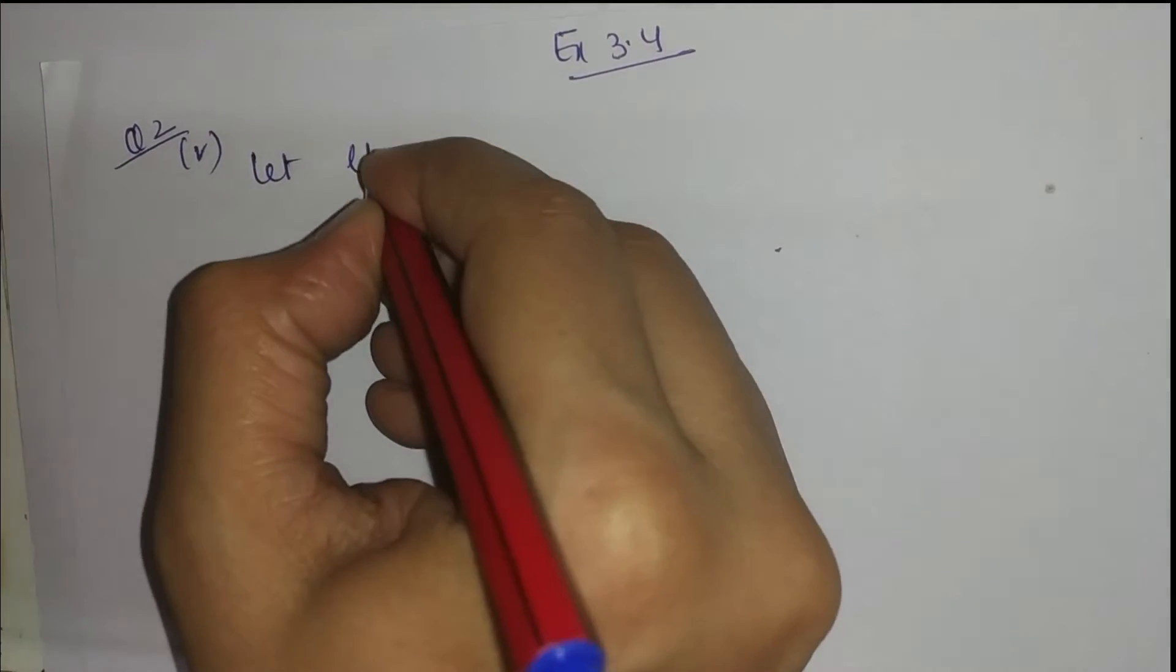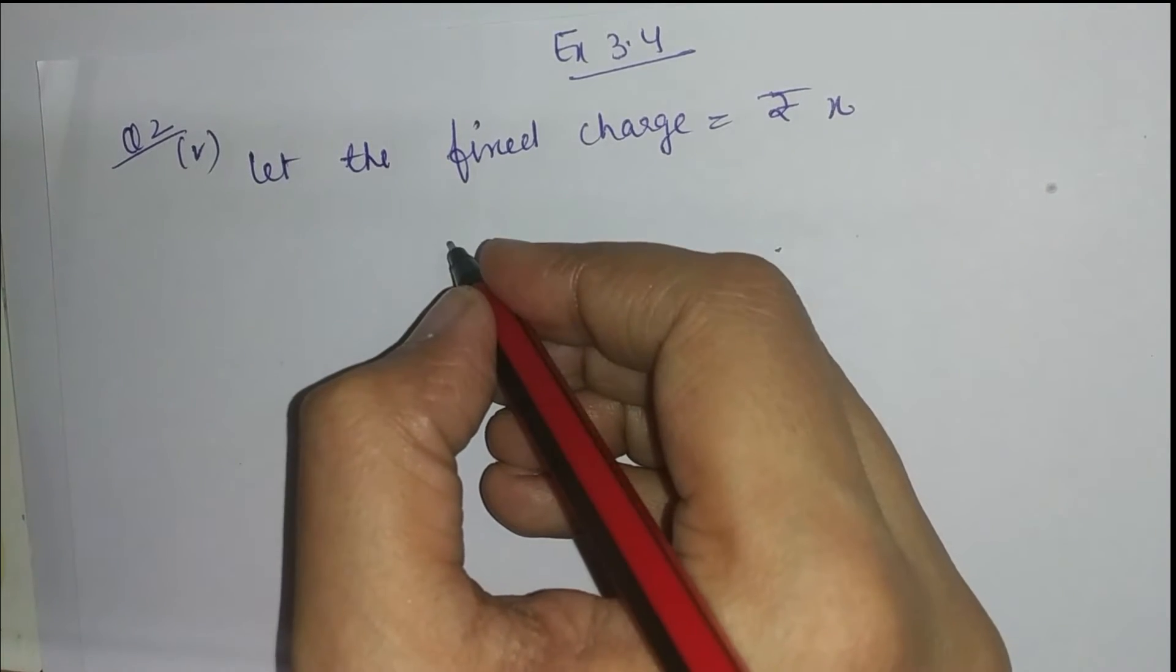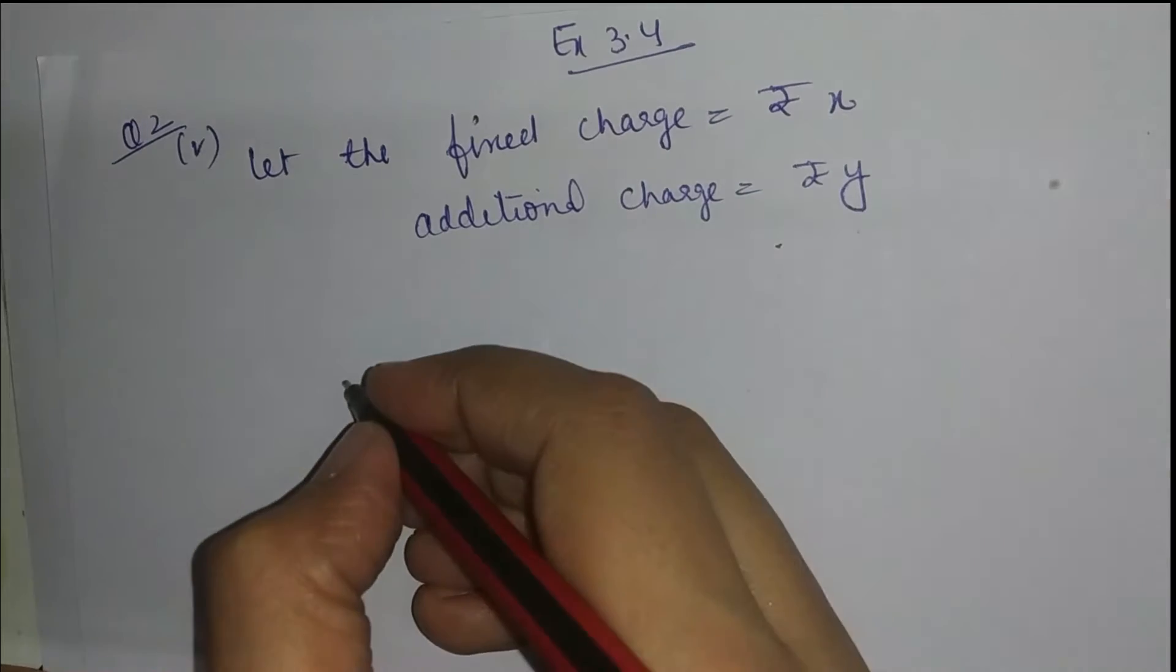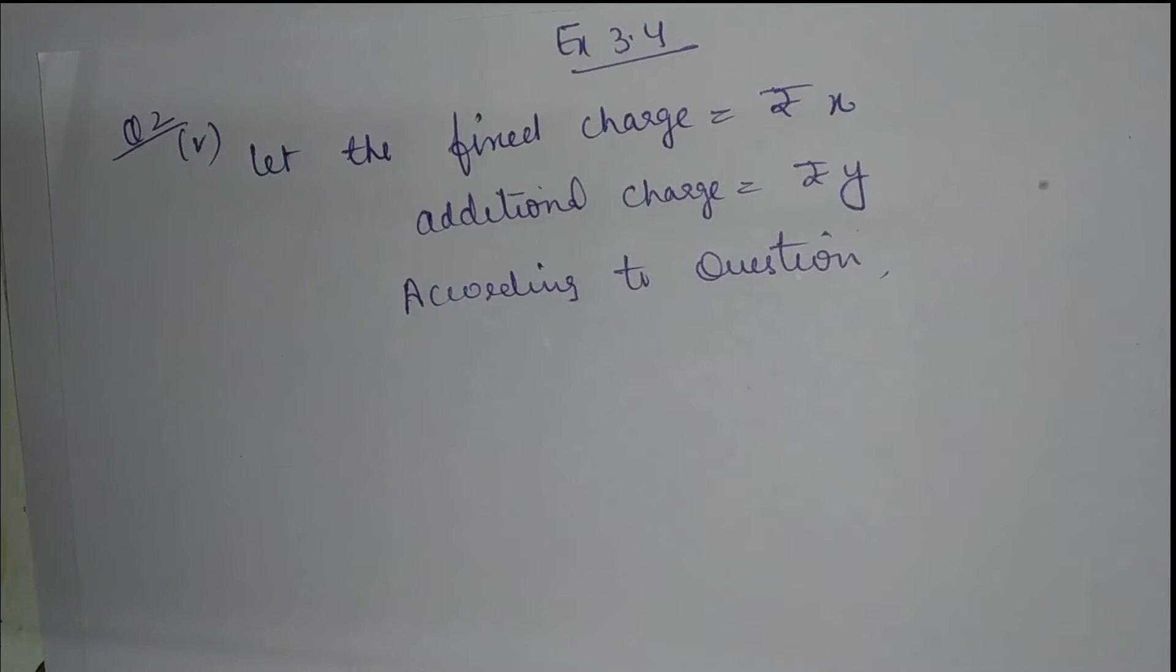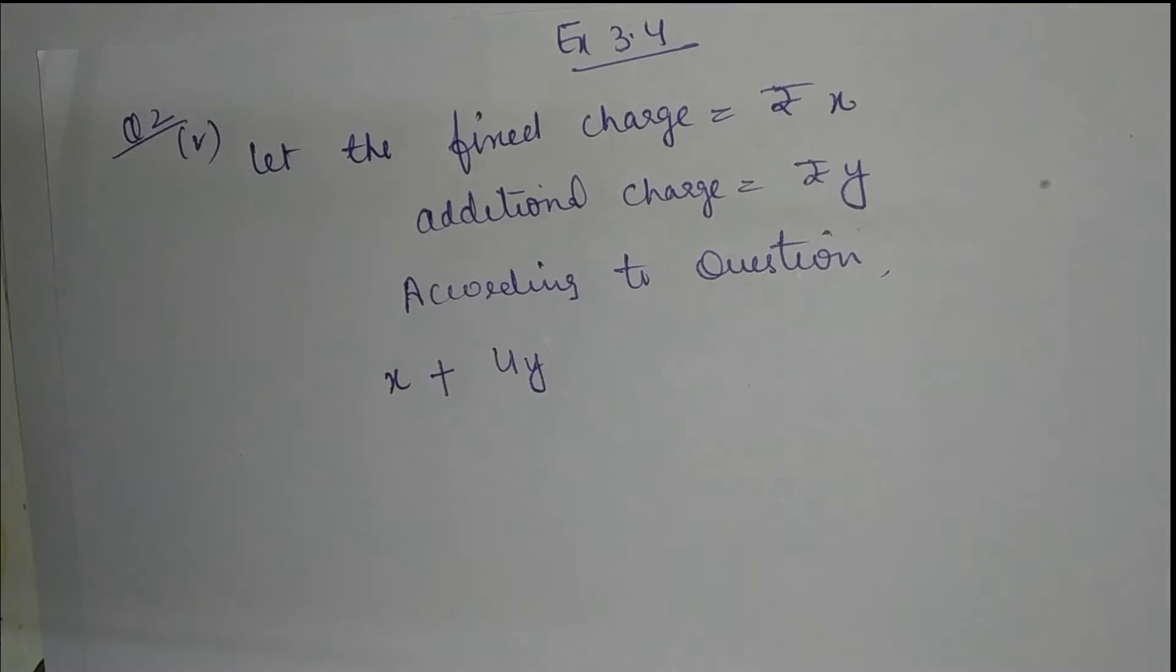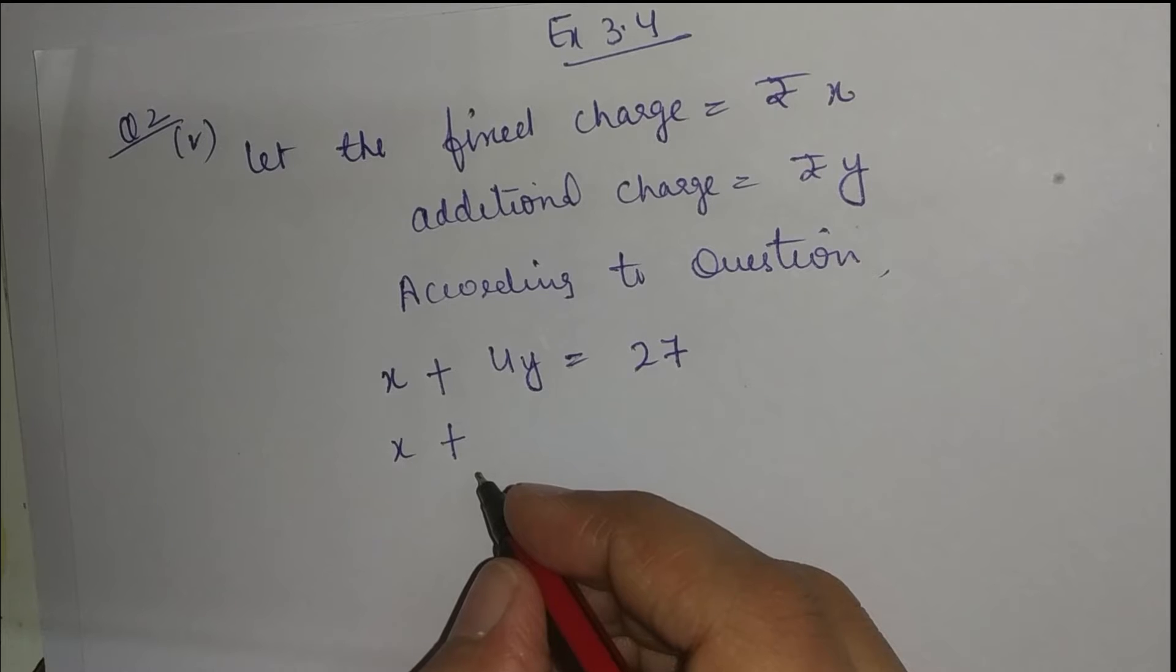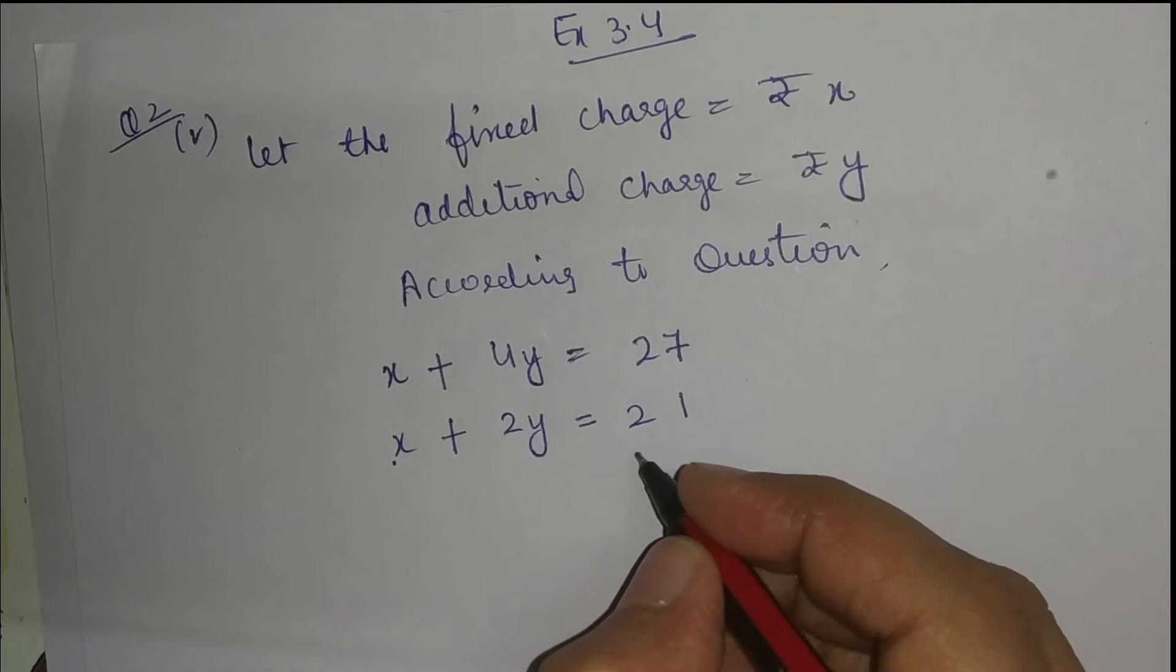Let the fixed charge be rupees x. Charge for each extra day, means additional charge, is equal to rupees y. To uske baad according to question, x plus, usne book rakhi 7 days ke liye, to three days ke liye to x ho gaya, extra the uske 4 days is equal to 27. And x plus, usne book rakhi 5 days ke liye, to three days ke liye to x ho gaya, extra the uske 2 days is equal to 21. This is our 1st and 2nd equation.